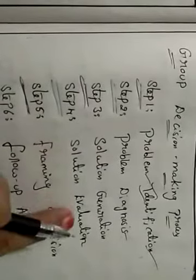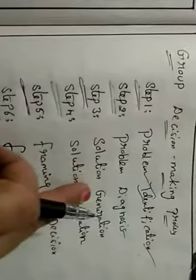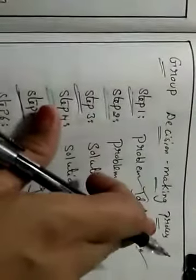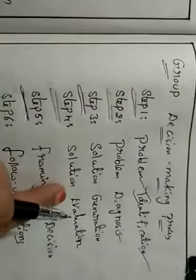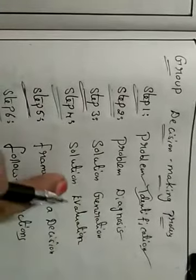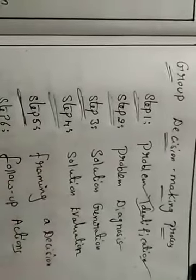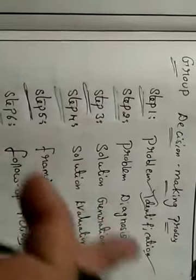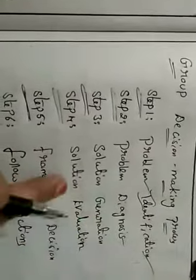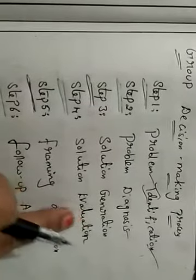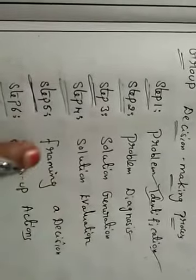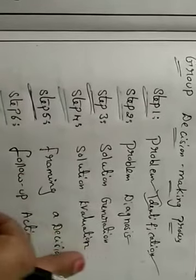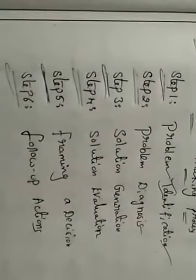The fourth step is solution evaluation. In this group decision making process, two or more persons generate different solutions, and the head of the group evaluates those solutions to determine which is better. They search for alternatives, evaluate, and analyze them. The fifth step is forming a decision — among the alternatives, we select the best one and decide how the decision will be implemented, such as arranging communication programs if there are communication problems, or motivating, guiding, and counseling employees facing difficulties.